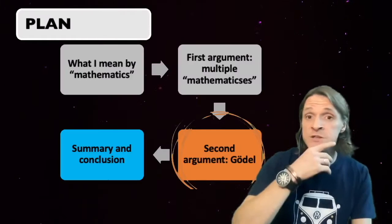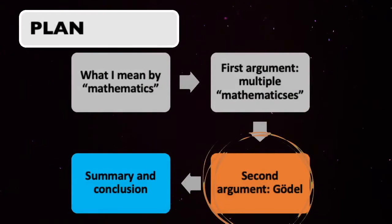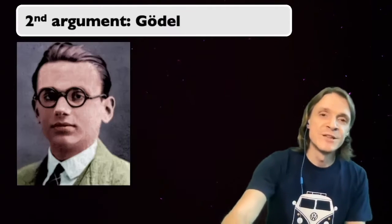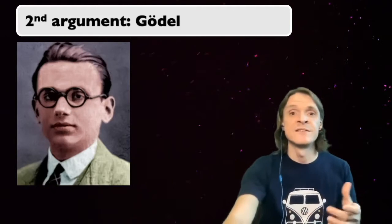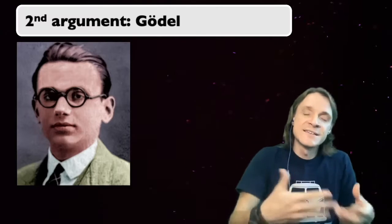So my second argument is Gödel's second incompleteness theorem. I'm sure you've heard about it, and I do not claim to understand it fully, but I will try to explain my simplified version of it, and what it means for the idea that mathematics is certain. So mathematics is an axiomatic system.